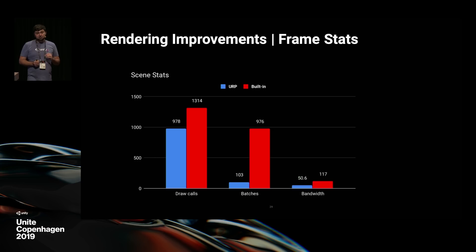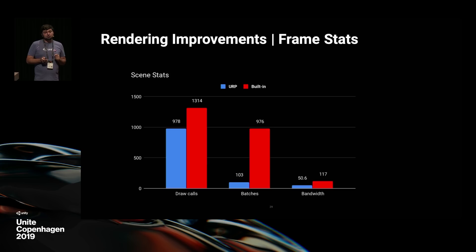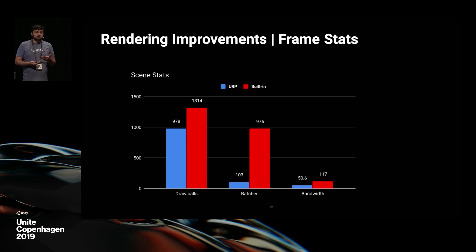Bandwidth — the amount of memory flushed and read from main memory — was reduced by about half. This is critical on mobile because more bandwidth means more power consumption, more heat, and overheating causes passive throttling of CPU and GPU, degrading performance. Both pipelines perform the same tasks in this scene — 2K shadow maps, a depth pre-pass, shadow map screen-space resolve, rendering, and post-processing — so the bandwidth gains come from the pipeline's optimizations.